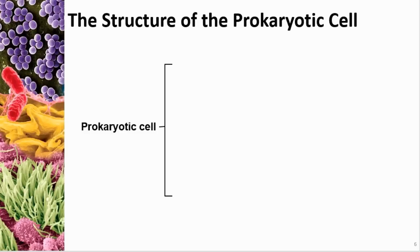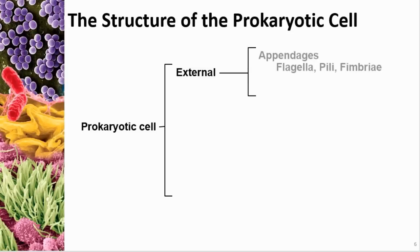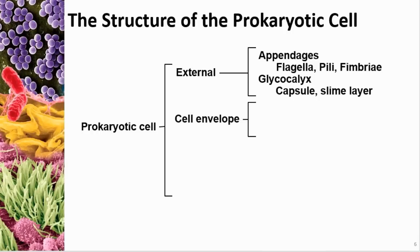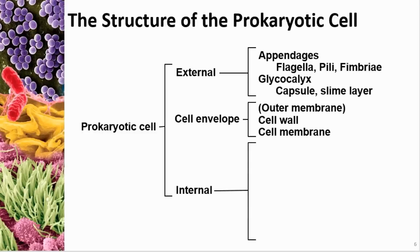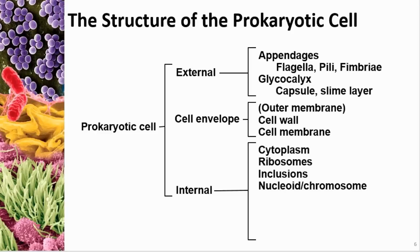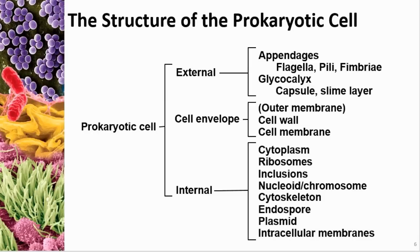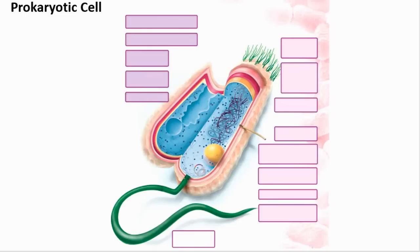Here are the basic properties of prokaryotic cells. On the outside there are appendages — flagella, pili, fimbriae — and a glycocalyx, which can be in the form of a capsule or a slime layer. The cell envelope includes an outer membrane in some, a cell wall in all, and a cell membrane in all. Inside, all cells have cytoplasm, ribosomes, inclusions, genetic material, and a cytoskeleton. Some can create an endospore, some have plasmids, and some have intracellular membranes.